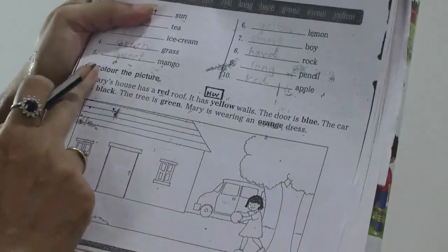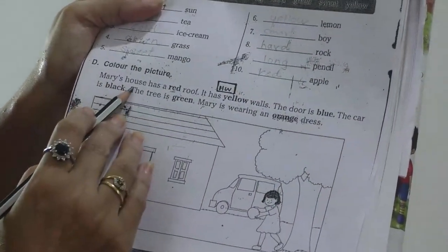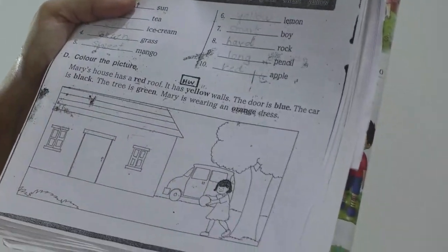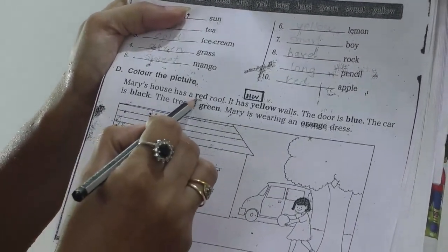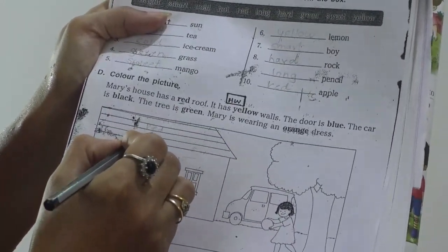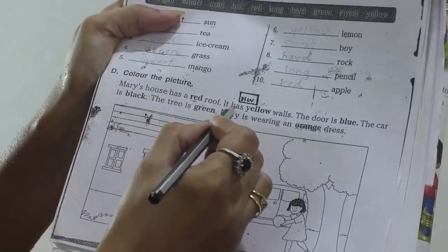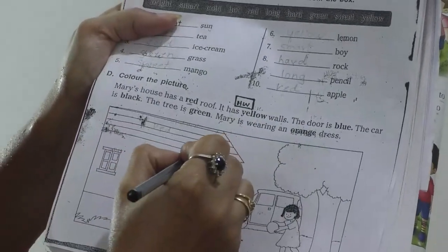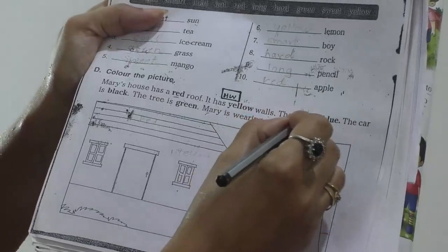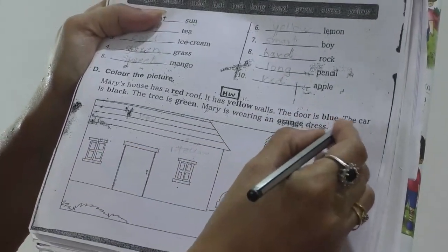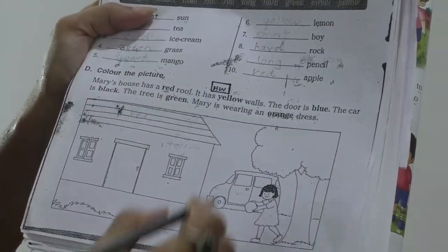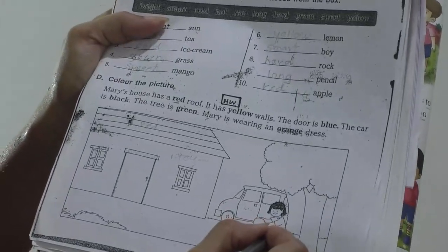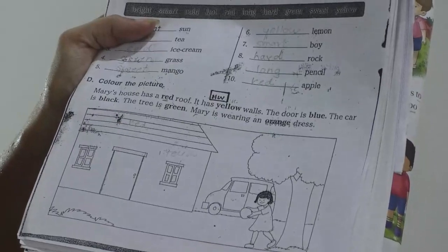Next is one activity. Color the picture. Mary's house has a red roof. Already they told about the colors which color we have to fill. For the roof, this is called a roof, with a red color you have to fill here. You have to fill here red color for the roof. It has yellow walls. You just give yellow color for the wall. The door is blue. Blue color for the door. The car is black. The tree is green. Here you just give green color. Mary is wearing an orange dress. You have to give orange color for the dress. You just complete this. After that you have to take out your grammar book.